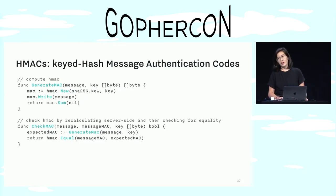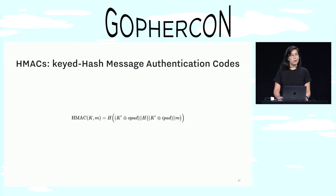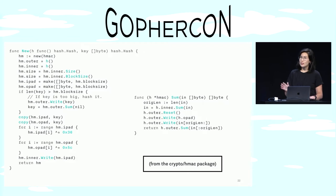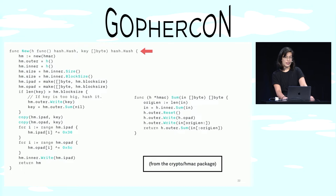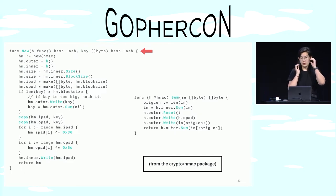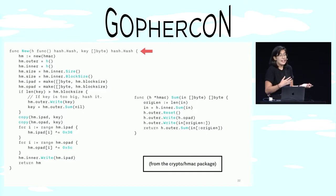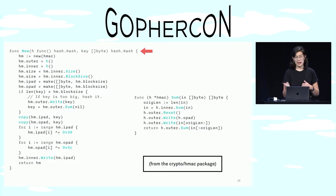And you might ask, what's going on under the hood there? Well, the HMAC construction can be described in this formula. Or you can look at the code in the standard library, which is only a little bit more legible at first glance. Here's what you should notice: the new function takes another hash's new function — you can use any hash function — and a key, two inputs, and the return value is a hash. So an HMAC behaves like any other hash function, except that the output of this particular instantiation will depend on this key.